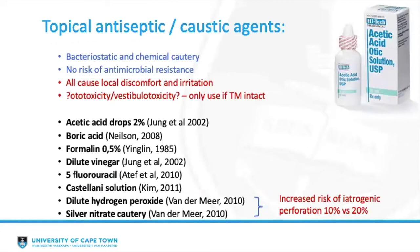Topical antiseptics and caustic agents are almost universally considered second-line, or perhaps first-line where antibiotic drops are unavailable or too expensive. The majority work through direct chemical cautery or caustic debridement of granulation tissue, as well as being bactericidal by creating an acidic environment not conducive to bacterial growth. Bacteria grow best at a pH between 6.5 and 7.5, whereas application of 1% acetic acid drops reduces the canal pH to approximately 2.5.